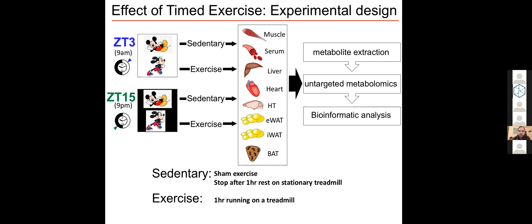Through our collaborators in Copenhagen, they ran the mice for one hour on a treadmill either in the morning at Zeitgeber time 3, the ZT3 here you see, so three hours after the lights come on in their animal facility, or at Zeitgeber time 15. So this is around 9 p.m. at night, three hours after the lights are turned off.